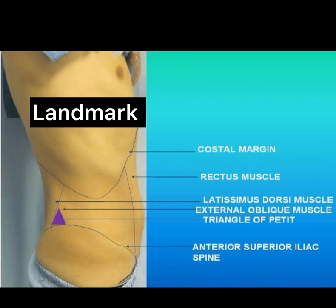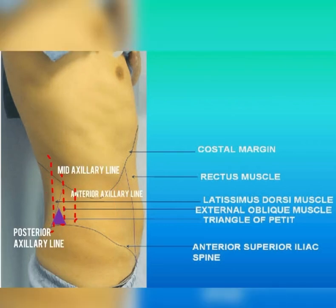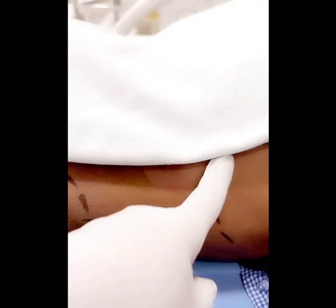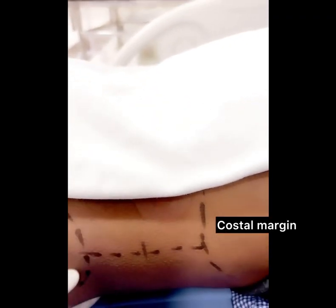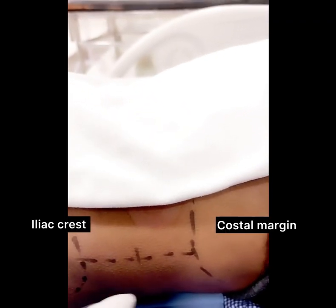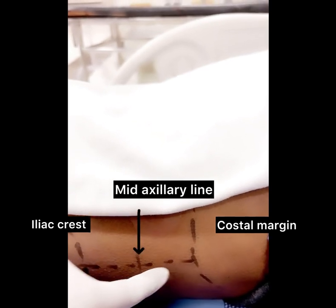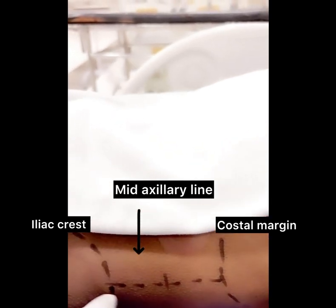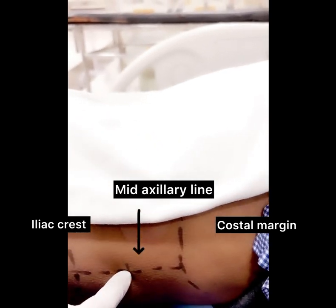The point of entry for TAP block is the lumbar triangle of Petit, which also corresponds with the mid-axillary line. This is the costal margin, this is the iliac crest, this is the mid-axillary line, and its midpoint is the point of entry.